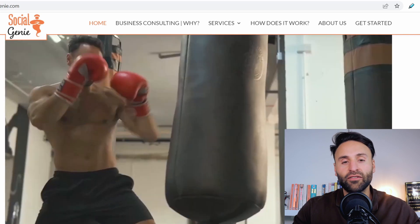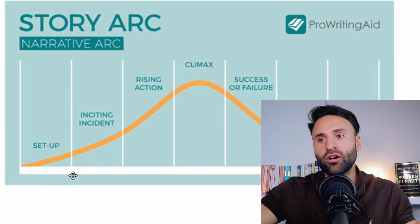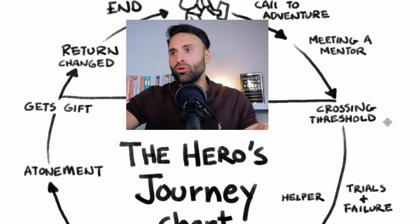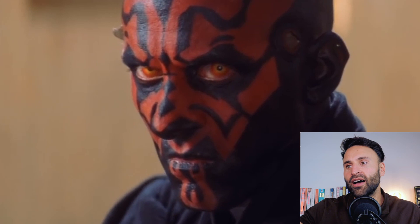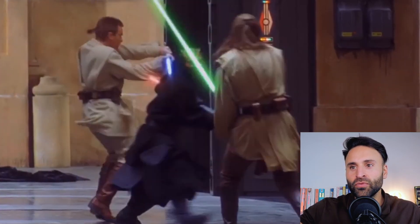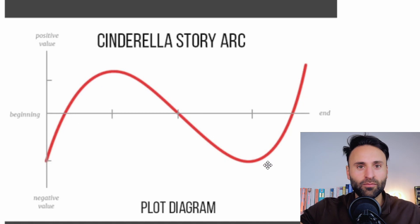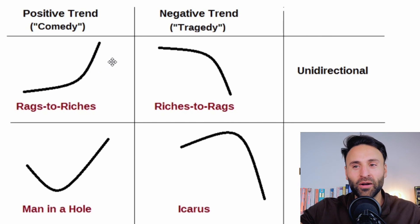You can take customers from pain to relief and ultimately happiness, and apply this to many different types of businesses. Here's a brief overview of a general story arc: setup, inciting incident, rising action, climax, success or failure, falling action, and resolution. There's also the hero's journey — a hero gets a call to action, meets a mentor, crosses a threshold, defeats some type of adversary, gets a gift, and returns. And there's the Cinderella story arc: starts very negative, becomes positive meeting the prince, goes negative losing him, then positive again when the glass slipper fits.